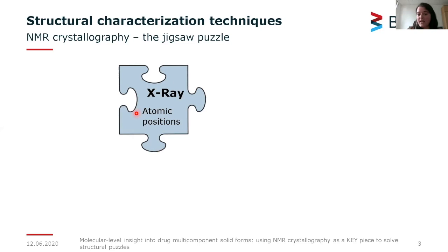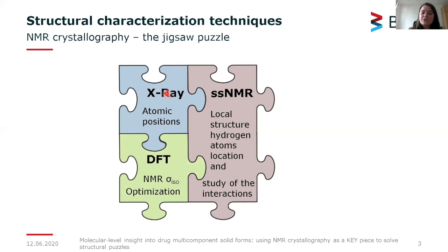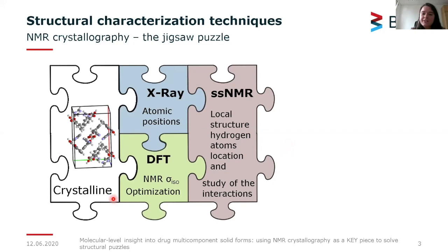With X-ray diffraction data we obtain information about atomic positions, distances, angles, and packing interactions. We can also use solid-state nuclear magnetic resonance, because this technique is very sensitive to nuclei and therefore we can locate hydrogen atom positions. We can study packing interactions, which together with X-ray gives us the overall view of the 3D packing structure. We can also perform density functional theory for geometry optimization and to calculate NMR parameters, which are then compared with solid-state NMR data and allow assignment of all NMR signals.